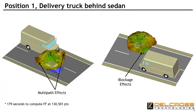First, we consider the situation where the delivery van is overtaking the automobile on the left. The Dell Cross Savant EM software is used to analyze the full scenario and determines the 3D radiation pattern for the antenna. In the two views, you can clearly see the blockage effect on the pattern from the van. Less intuitive are the pattern lobes that result from the multipath effects of the signal bouncing off the van and reinforcing direct radiation in those directions.